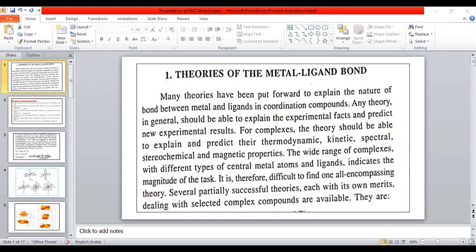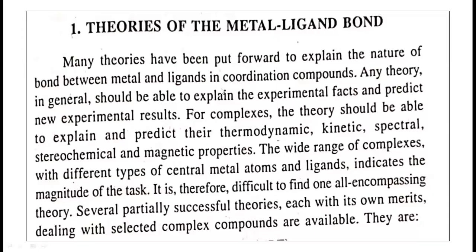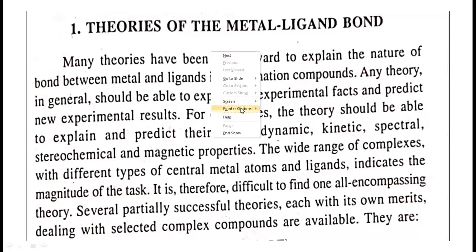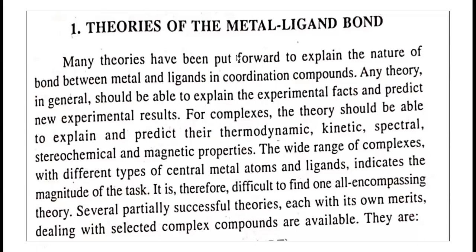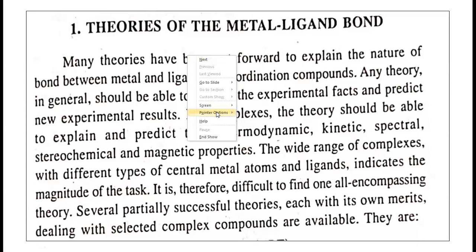On the basis of valence bond theory, the bond between the metal and the ligand is a coordinate covalent bond. The ligand molecules are donating their electron pairs to the metal atom, and the metal atom or ion has the capacity to accept the electron pair from the ligand.